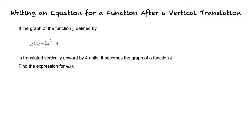If the graph of the function g defined by g(x) = 2x² - 4 is translated vertically upward by 4 units, it becomes the graph of a function h. Find the expression for h(x).